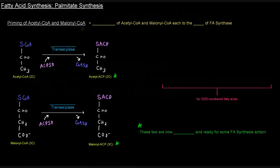In this video, we're going to talk about palmitate synthesis and the actual reactions of it. Before the reactions can occur, we need what's called the priming of acetyl-CoA and malonyl-CoA, which is essentially the attaching of acetyl-CoA and malonyl-CoA each to the acyl carrier protein of the fatty acid synthase complex. The acyl carrier protein carries the substrates from catalytic site to catalytic site, so we need to attach the substrates to the ACP first.